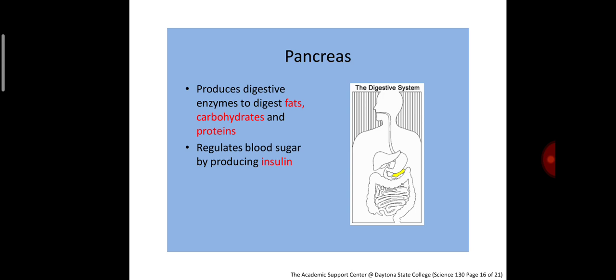The pancreas produces digestive enzymes to digest fats, carbohydrates, and proteins. It regulates blood sugar by producing insulin.